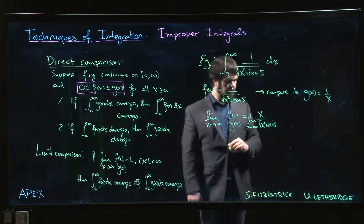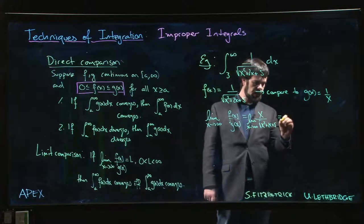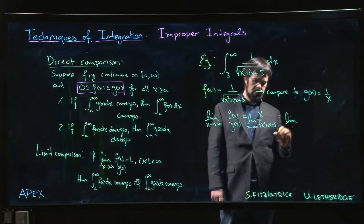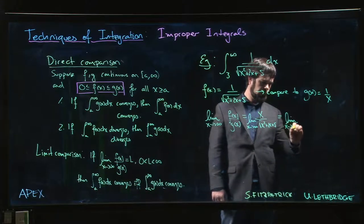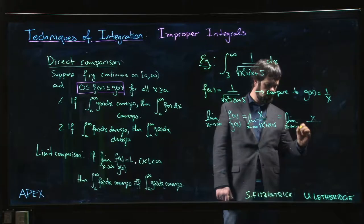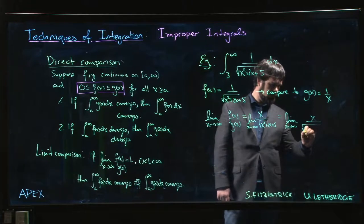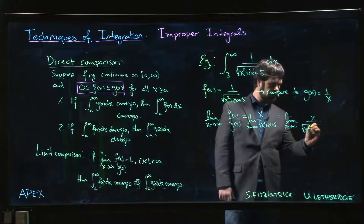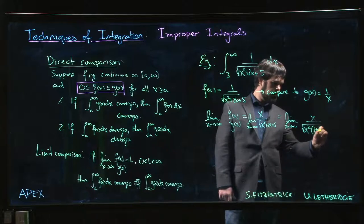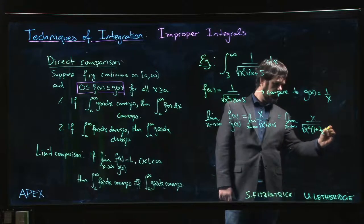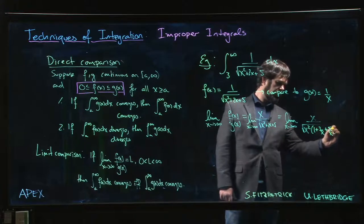As X goes to infinity, X over - on the bottom, factor out an X squared. This is 1 plus 2 over X plus 5 over X squared. And because X is bigger than 0, I can split that up as the square root of X squared...